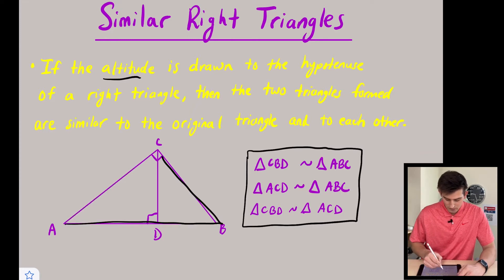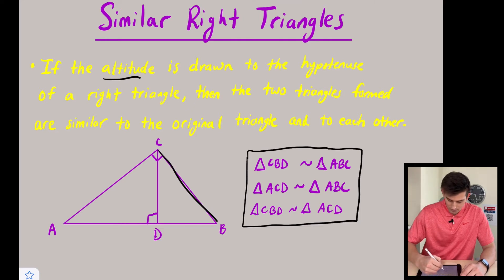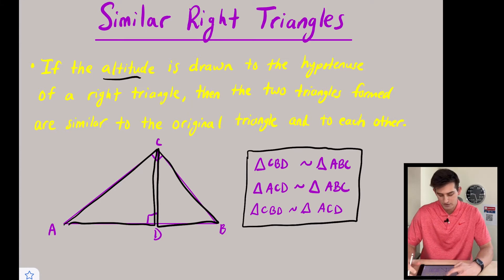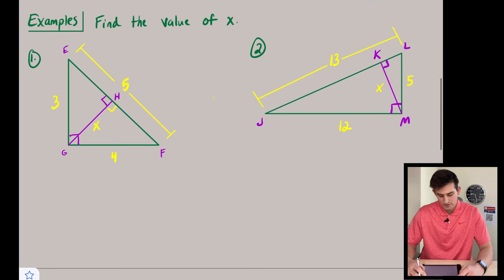Then we have triangle ACD, so our triangle here on the left, and that is also similar to ABC, so our large right triangle. And lastly we have CBD, so our small right triangle on the right, and it is similar to ACD, so our right triangle on the left. So all these triangles are similar, and so what this allows us to do is solve some problems where we have missing side lengths or maybe the missing altitude of a triangle.